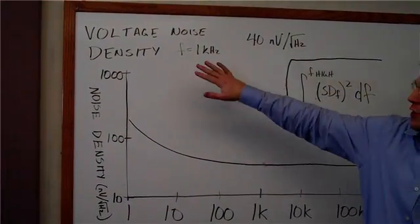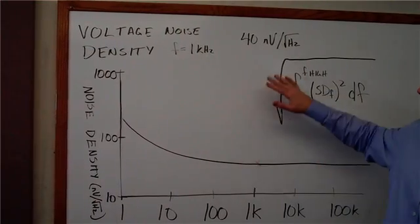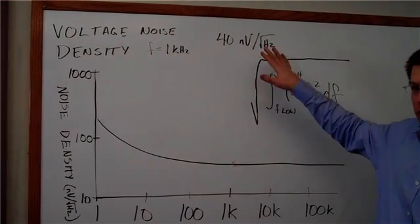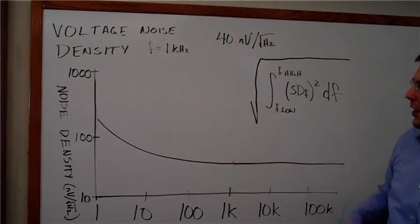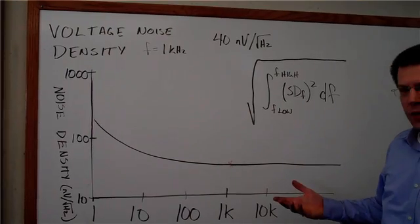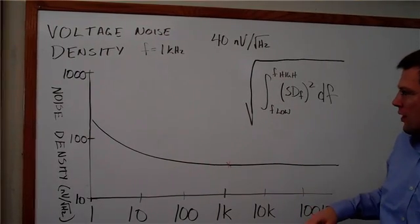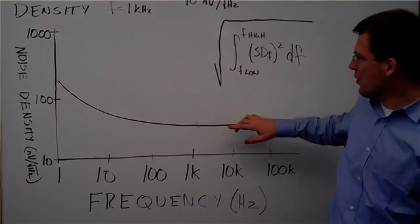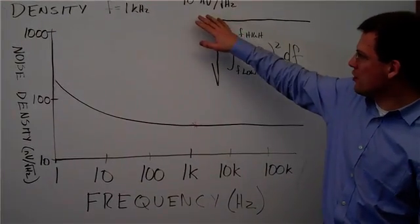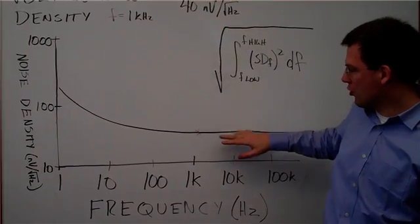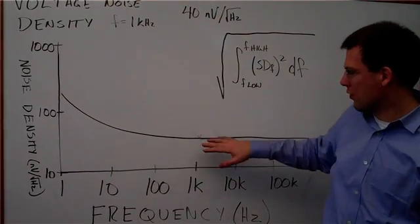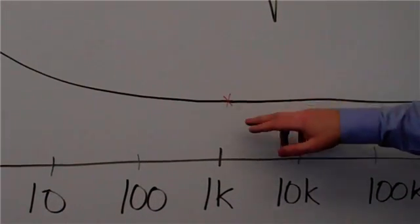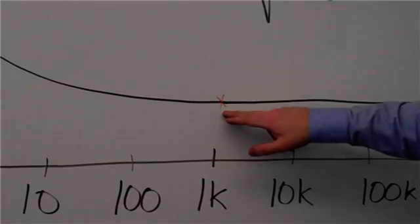So it'll say voltage noise density at a particular frequency, and then it'll say something like nanovolts per root hertz. And that is the spectral noise density. Typically also on a datasheet, in the typical performance section, you're going to see a curve like this. And if you look, you'll notice that this point in the datasheet table corresponds to the point in the curve in the typical performance curve. So this 40 nanovolts per root hertz at 1 kilohertz is right here on the curve as well.